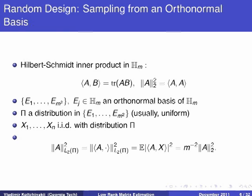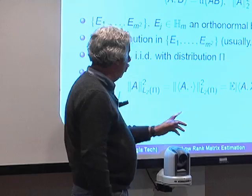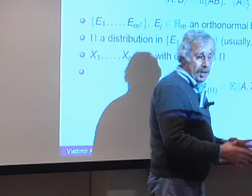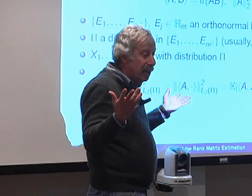This is not going to be the Hilbert-Schmidt norm — it will be a rescaled Hilbert-Schmidt norm. If you compute this expectation, it will be precisely M to the power minus two times the square of the Hilbert-Schmidt norm. So it's a rather weak norm compared to the Hilbert-Schmidt norm because of this scaling factor.